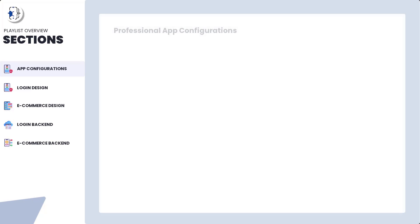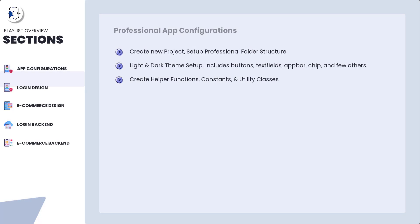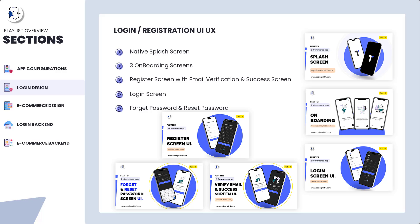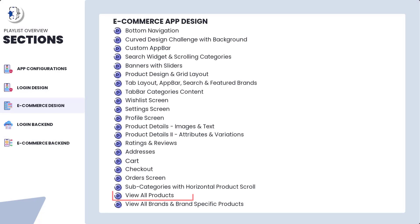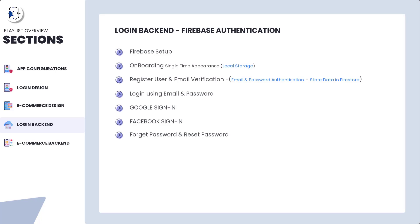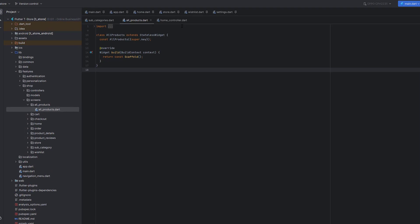We've already completed Section 1 covering project setup, folder structure, themes, and configurations. In Section 2 we designed the complete login flow including forgot password, registration, splash, and onboarding screens. In Section 3 we've completed the e-commerce application design, and this is the second-to-last video of Section 3. From Section 4 onwards we will start the backend. Let's get started with today's tutorial.